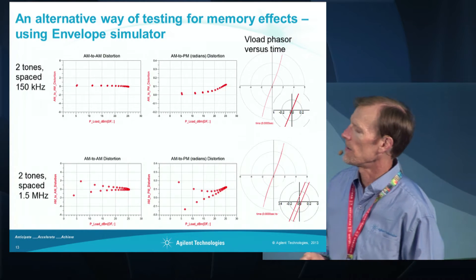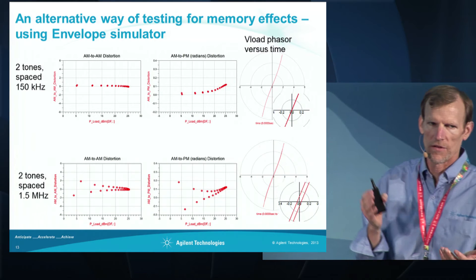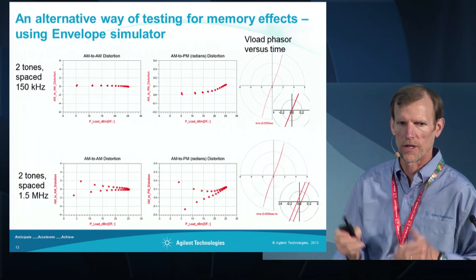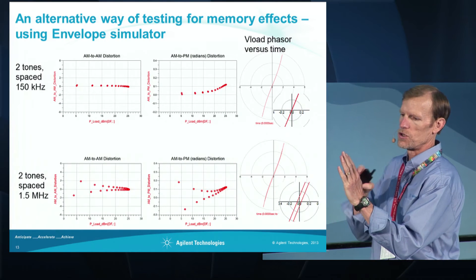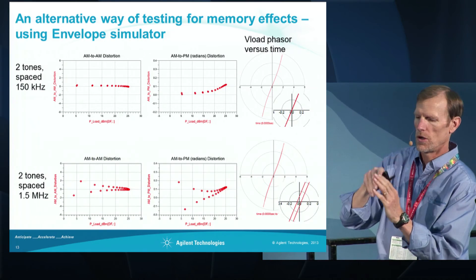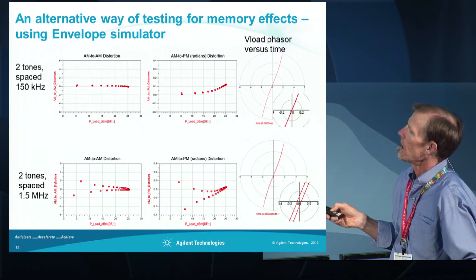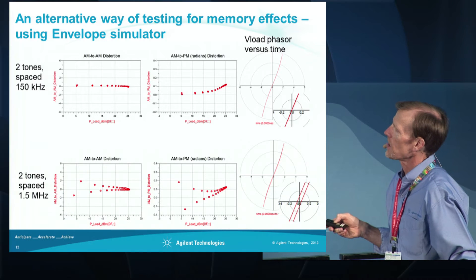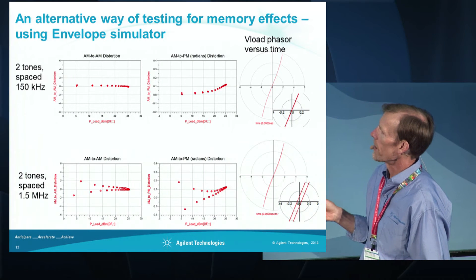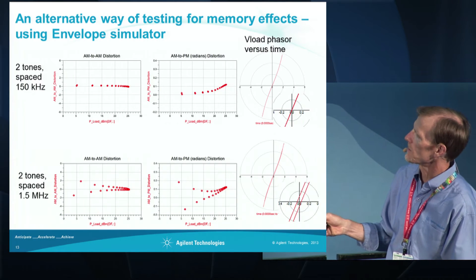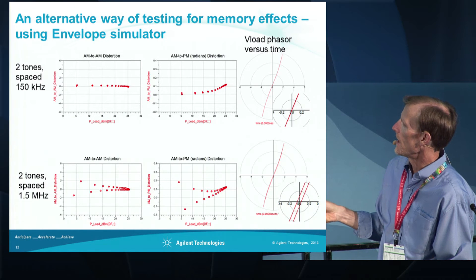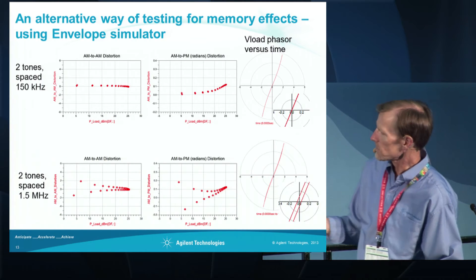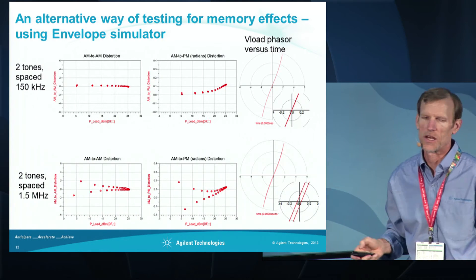This is another method of looking at memory effects. If you apply cosine amplitude modulation to a sinusoid, you're basically sweeping the amplitude of the signal up and down and changing its phase as well. The output phasor moves back and forth as a function of time. If you have a slow rate of modulation, you don't get much distortion or spreading. But if you have a faster rate of modulation, you see hysteresis occurring and spreading in the lower plots, which are indications of memory effects.